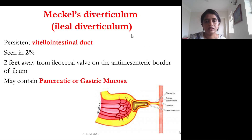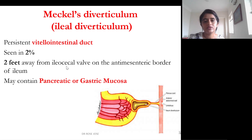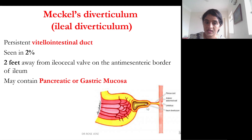Meckel's diverticulum, or ileal diverticulum, is due to persistence of the vitelline intestinal duct connecting the yolk sac with the midgut. It follows the rule of twos: seen in 2% of individuals, located two feet from the ileocecal valve on the anti-mesenteric border of the ileum. This diverticulum may sometimes contain pancreatic as well as gastric mucosa.